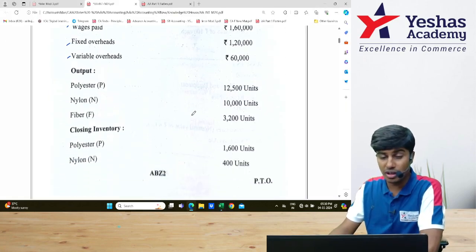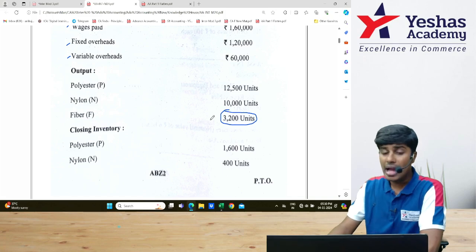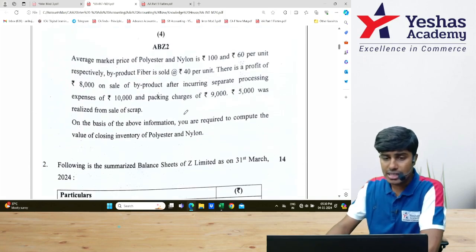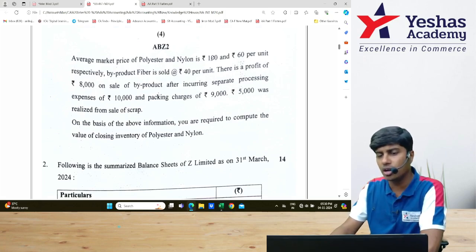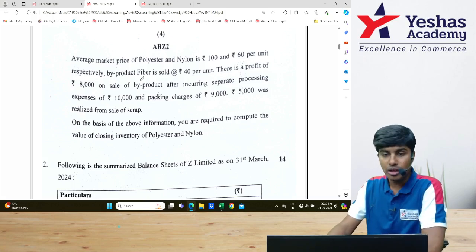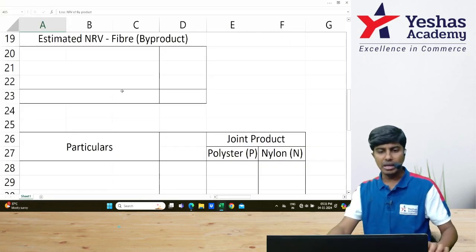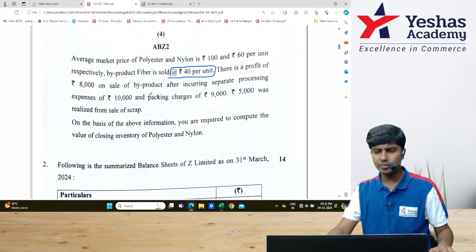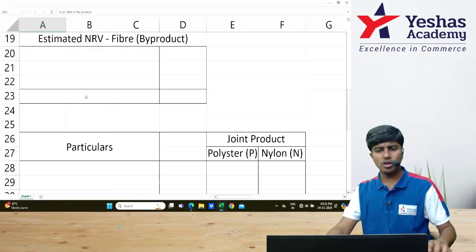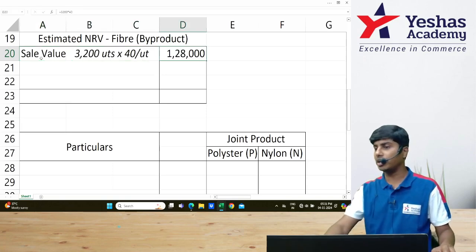Polyester output—sorry, fiber output is 3,200 units. Each unit is sold at how much? Average market price for polyester and nylon is ₹160, that is used for identifying our sales ratio. Fiber is sold at ₹40. Each unit of fiber is sold at ₹40. I will multiply 3,200 units of fiber with ₹40 per unit. That gives me ₹1,28,000.